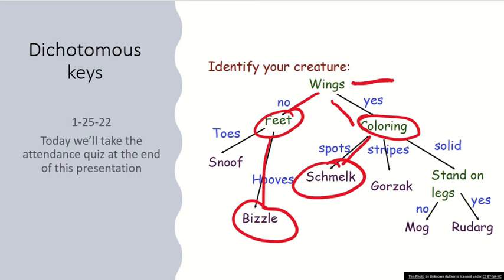Unfortunately, insects can be very complicated. There are so many kinds of insects — way more than you probably thought before taking this class. It's almost rare that you're able to get down to species level unless you're some type of expert in that field. I struggle with identifying lots of insects down to species, and I'm usually happy if I can get to the genus or family level.